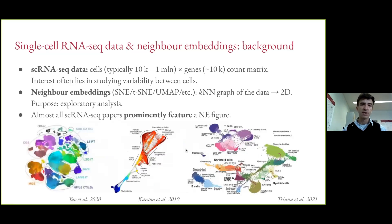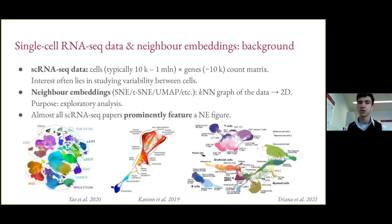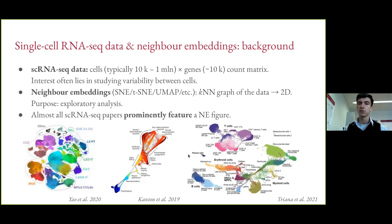This became extremely popular in the transcriptomic literature, and almost every RNA-seq paper nowadays prominently features a t-SNE or UMAP plot as part of figure one. The figures are pretty — they're eye candy — people like to make them and look at them.